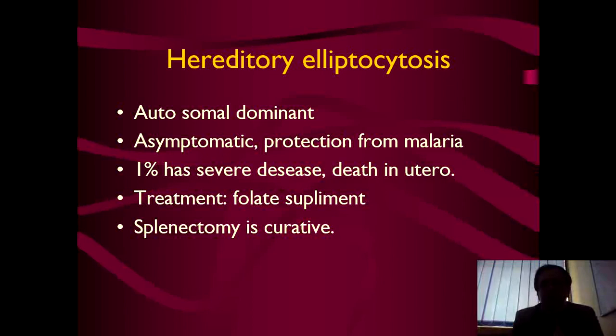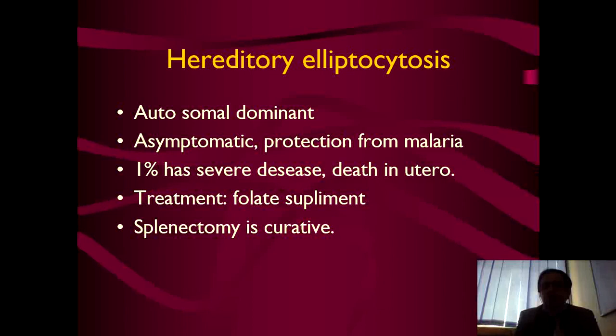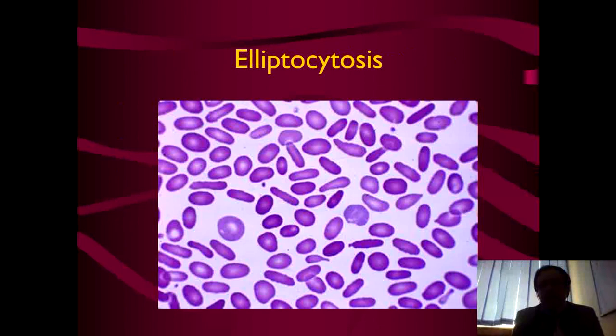Hereditary elliptocytosis is another subtype of membrane defect hemolytic anemia — also autosomal dominant. Patients remain mostly asymptomatic and have the benefit of protection against malaria, but 1% have severe disease and die in utero. Treatment includes folate supplementation, and splenectomy is curative in hereditary spherocytosis when it presents in severe form. The slide shows classical elliptocytes — remember their shape, as elliptocytosis is sometimes a lethal disease.